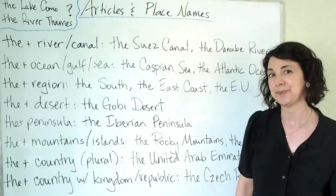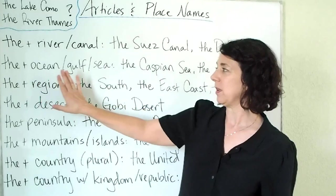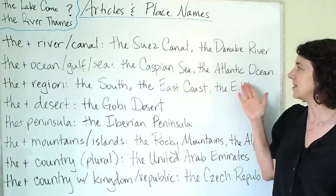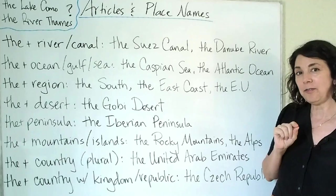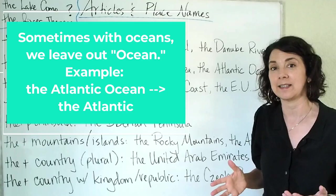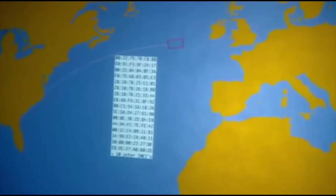The next rule is 'the' with ocean, gulf, or sea. For example, the Caspian Sea and the Atlantic Ocean. Often we will drop the word ocean and just say the Pacific or the Atlantic — that's a short way to say the Pacific Ocean or the Atlantic Ocean. For example, 'He's flying over the Atlantic.'